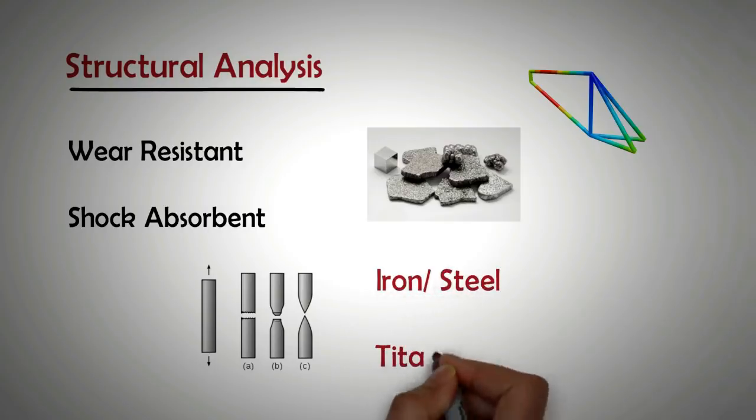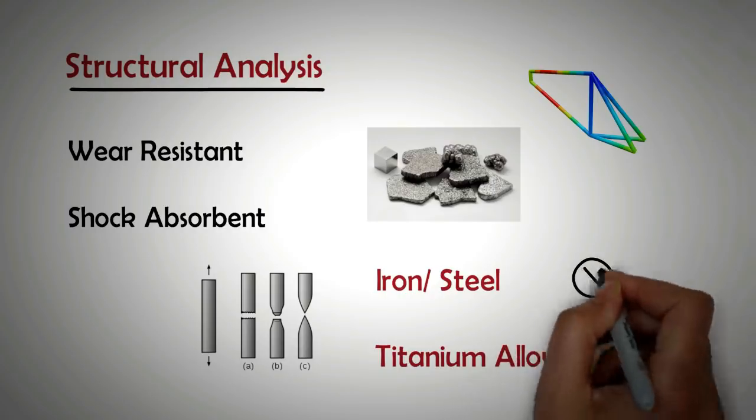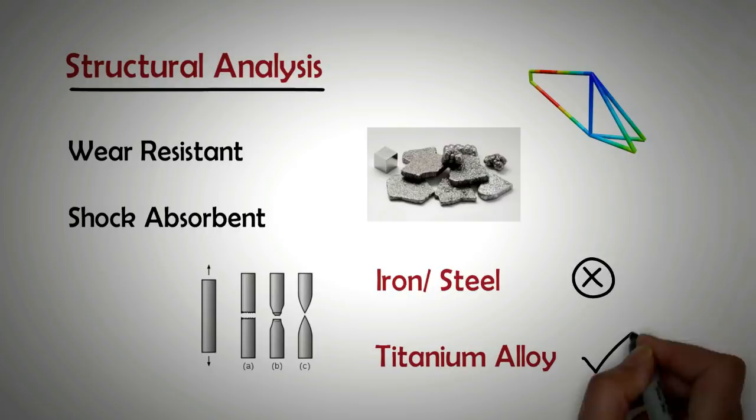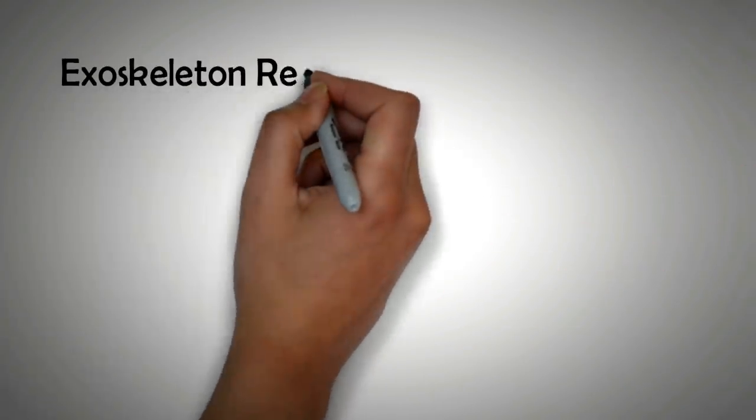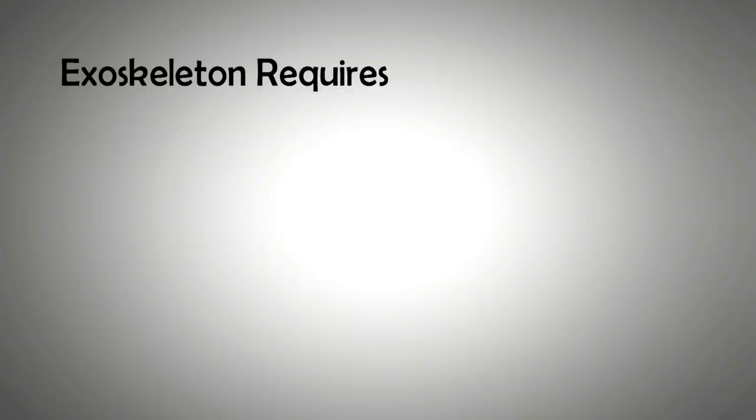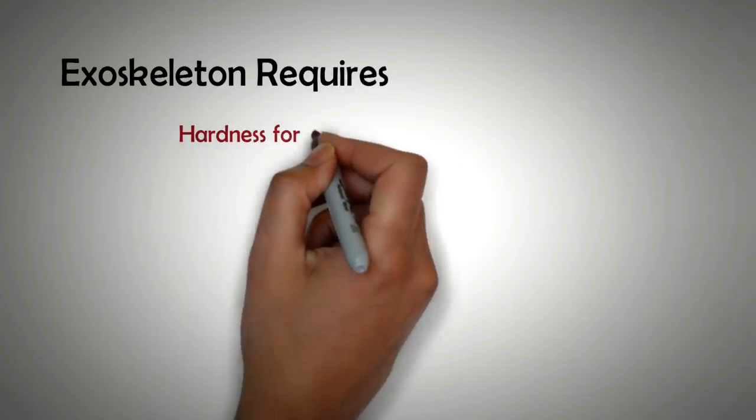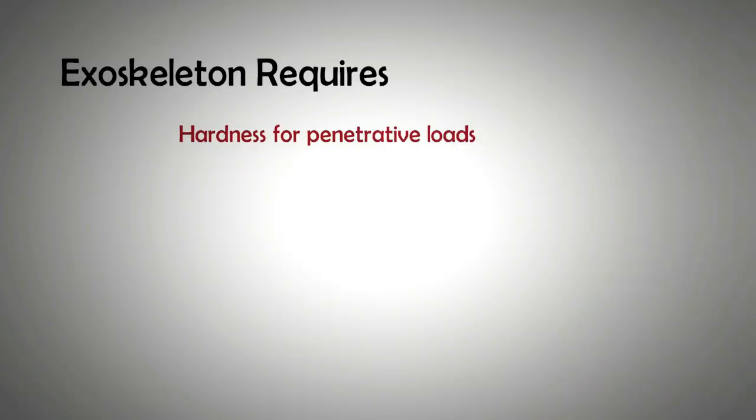In real life, the only thing coming close to Iron Man exoskeleton structurally would be titanium alloys. Titanium alloys are not only extremely strong in tensile strength but also lighter and therefore will provide fluidity of movement compared to any heavy material counterparts like steel. Having an outer hard material is alright to bear the brunt and provide strength against penetration.